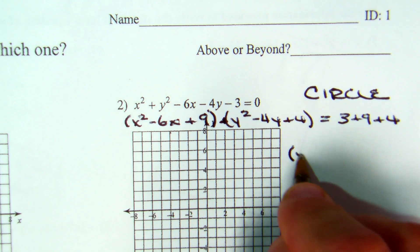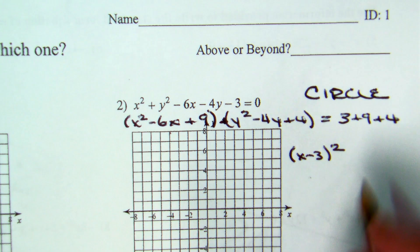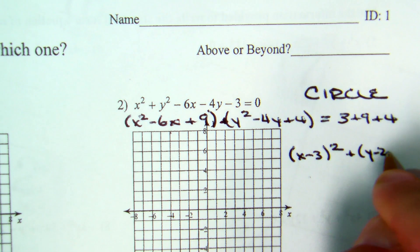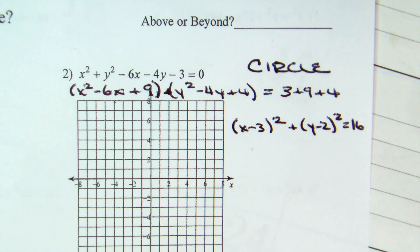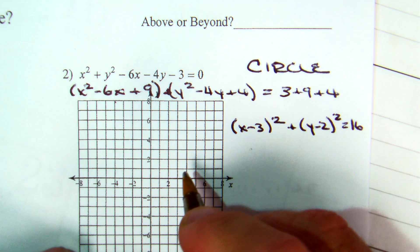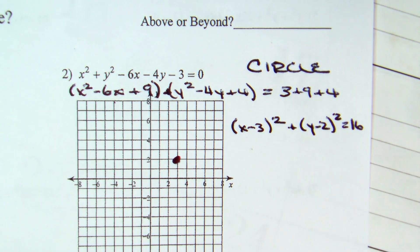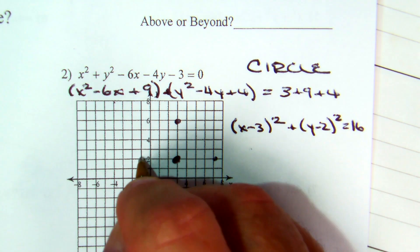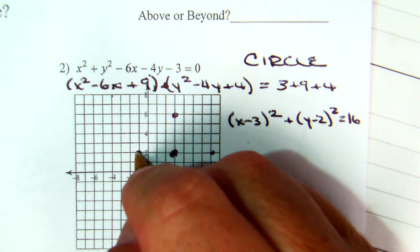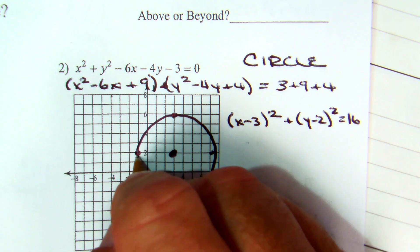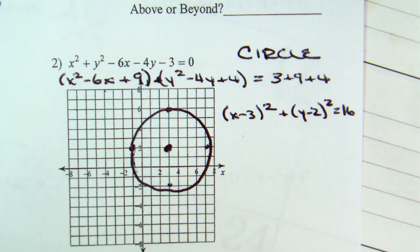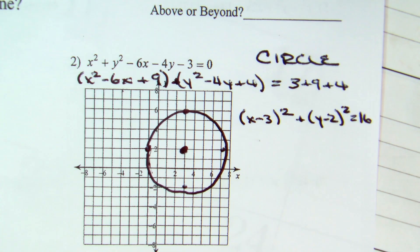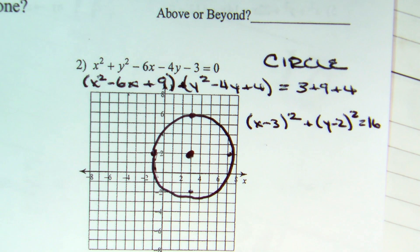That's going to factor into x minus 3 squared plus y minus 2 squared equals 16. What is the opposite of negative 3? 3. Opposite of negative 2? 2. So, that's my center. r squared is 16. So, my radius is 4. When drawing circles, my suggestion would be you do the horizontal and vertical radii or diameters depending upon your perspective, and then just try to connect as much as you can. Boom. Good so far.